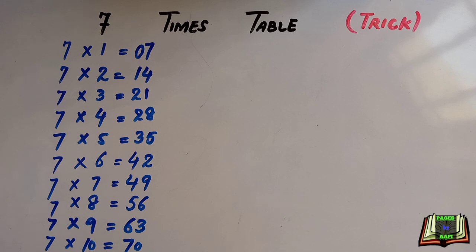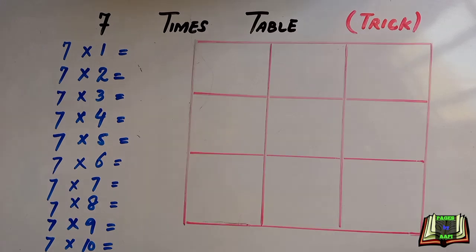Now we are going to learn the 7 times table trick. When you are multiplying by 7 and you want an accurate answer, this trick will be very helpful and time saving. We will draw a 3 by 3 tic-tac-toe grid.